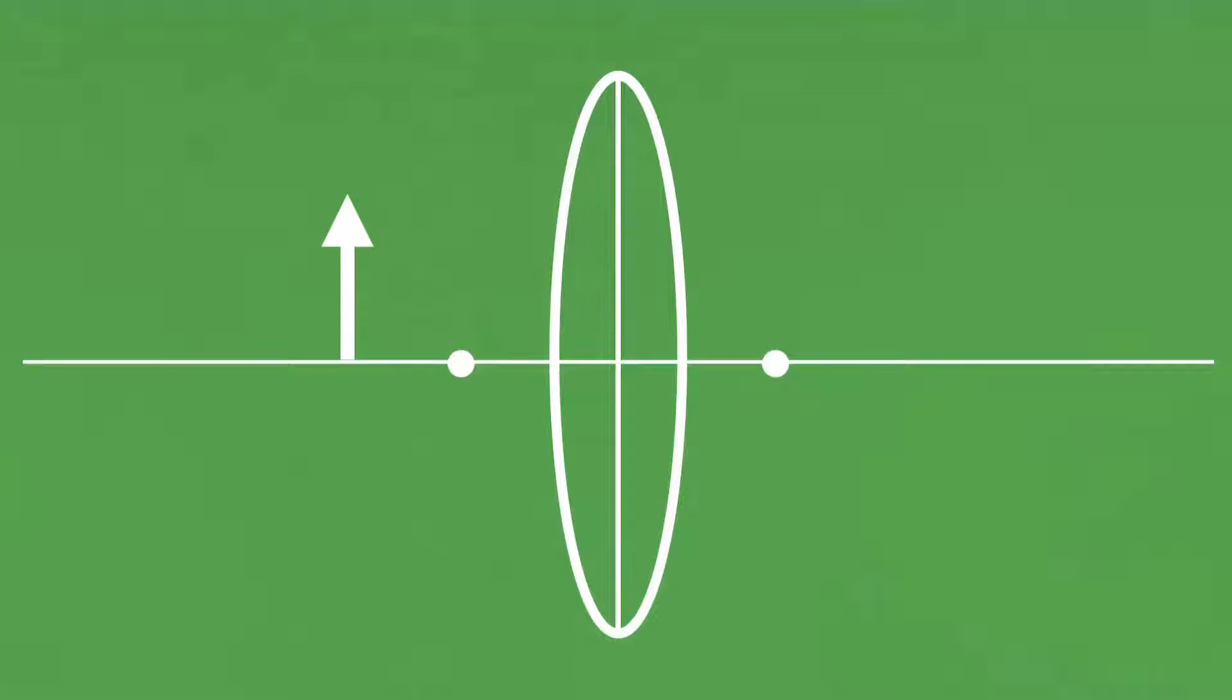A ray coming towards the lens, parallel to the focal length, will be refracted to go through the focal point on the other side. A ray coming through the nearer focal point will be refracted parallel to the focal length. Finally, a ray coming through the center of the lens won't be refracted at all.